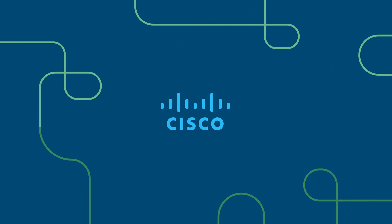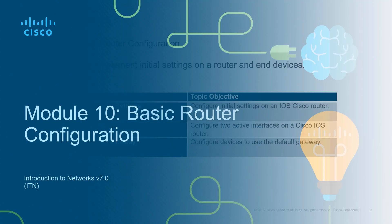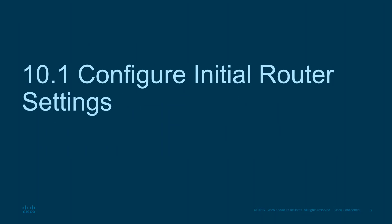Welcome to my Introduction to Networking course, typically abbreviated ITIN. This will be for the CCNA version 7 curriculum. Module 10 is about basic router configuration. In this module we're looking at how to configure basic router settings, looking at the interfaces and setting up the default gateways on devices. Let's jump right in — configuring the initial router settings.